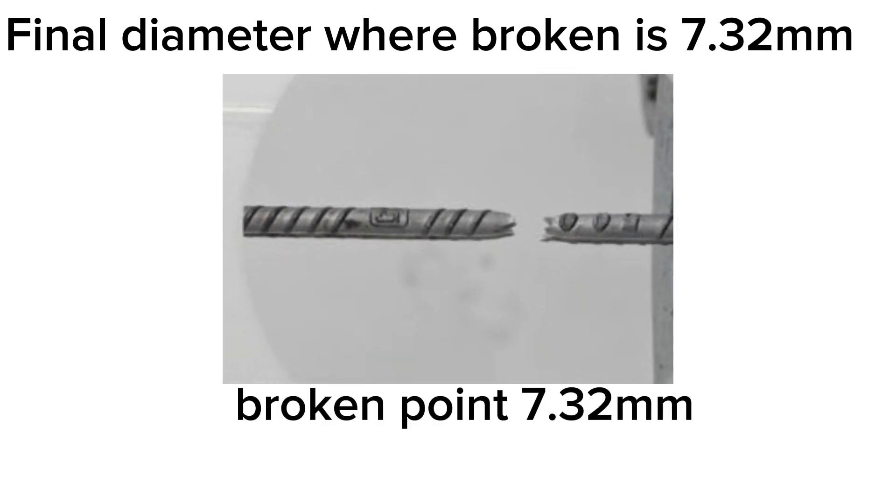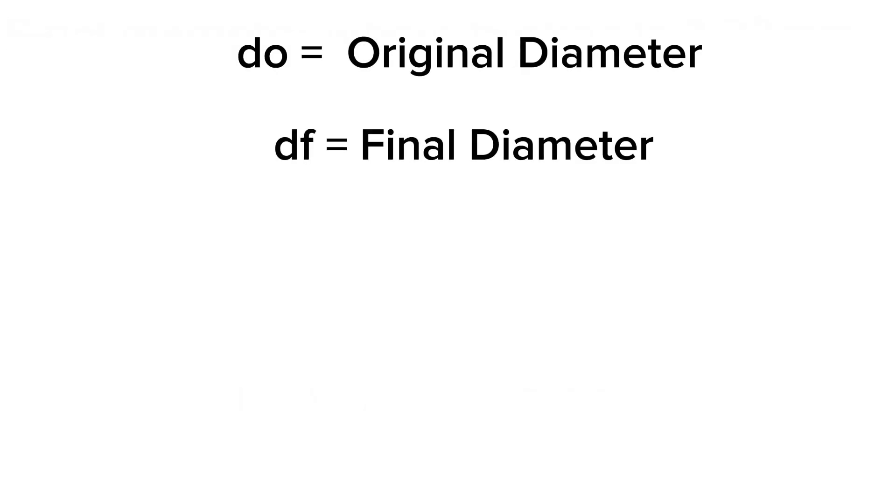Do equals original diameter, Df equals final diameter. Do equals 12mm, Df equals 7.32 millimeters.